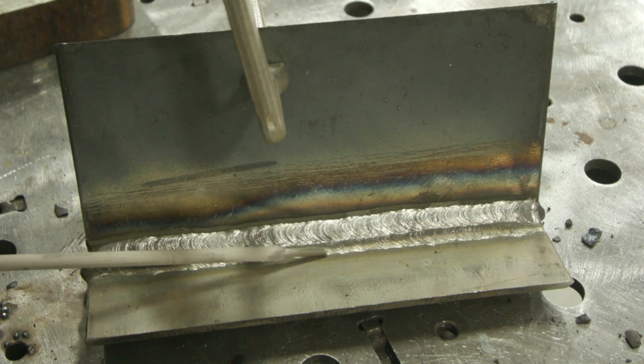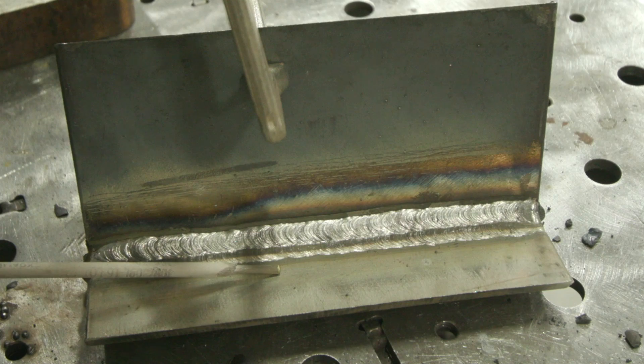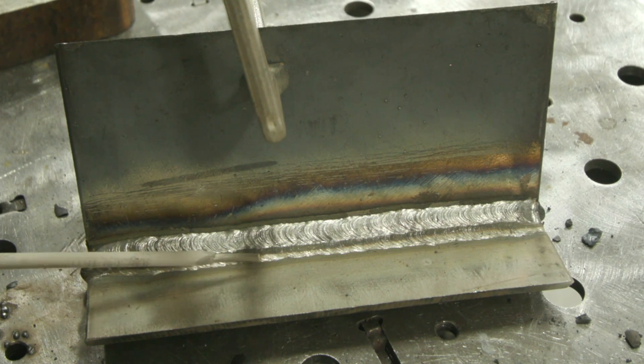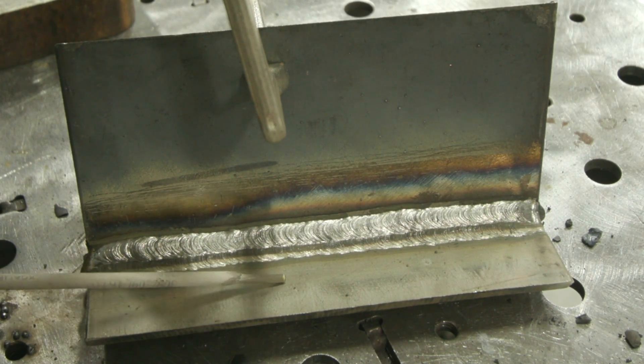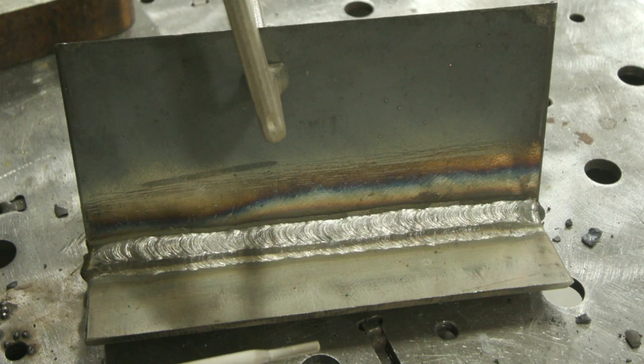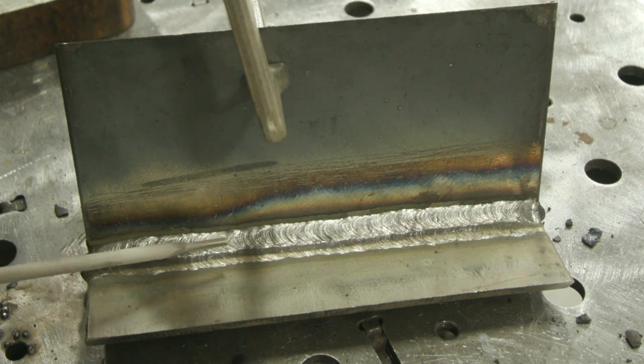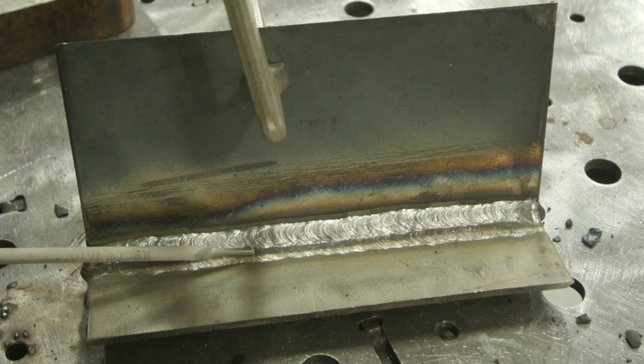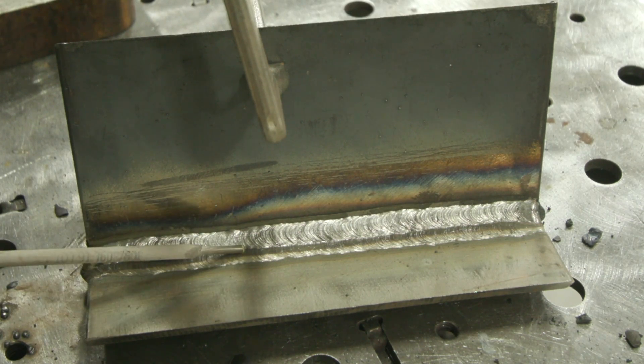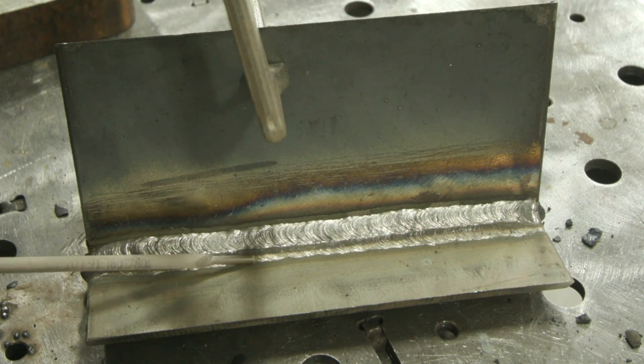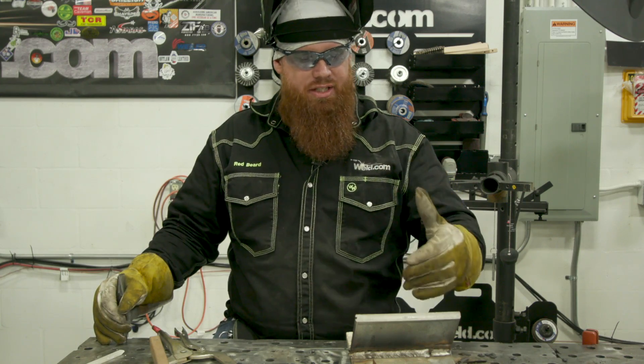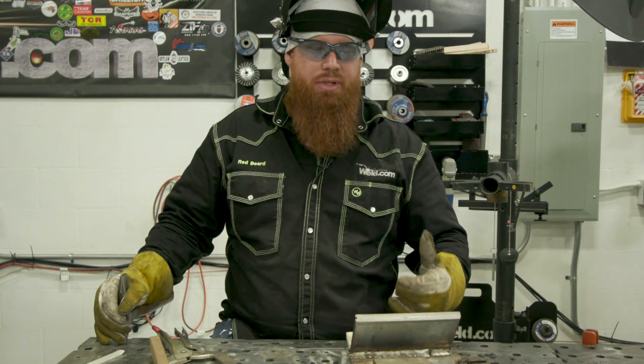You'll notice that the stainless has a tendency to warp up a lot more. So fixturing is going to be key with this. Running one pass, allowing it to cool, watching your inter-pass temperature so it doesn't get too hot, giving it ample time to cool - those are just little things you got to watch for when you're dealing with stainless. That's 309 steel to stainless. I hope you guys enjoyed watching the video.